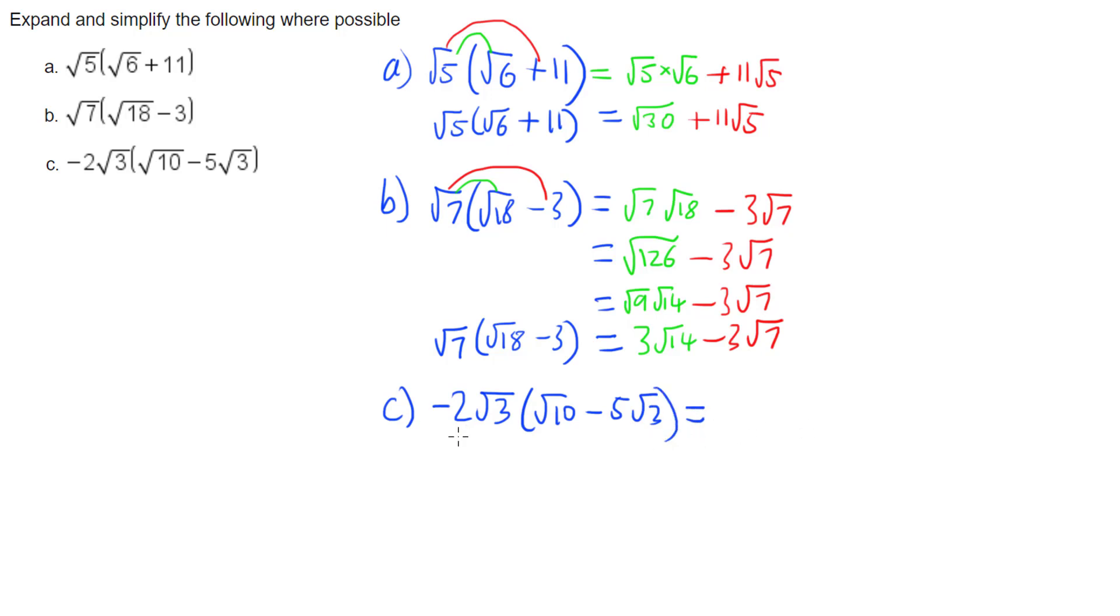Multiplying minus 2 root 3 times root 10 gives us minus 2 root 3 root 10. Then minus 2 root 3 times negative 5 root 3. Negative times a negative gives me a positive. 2 times 5 is 10, root 3 times root 3.